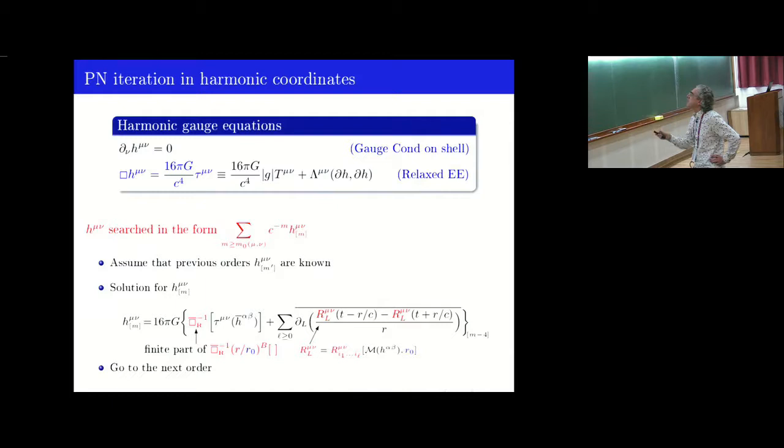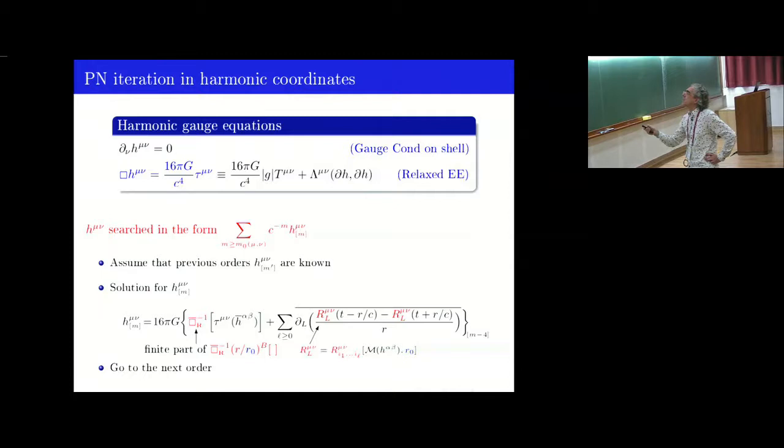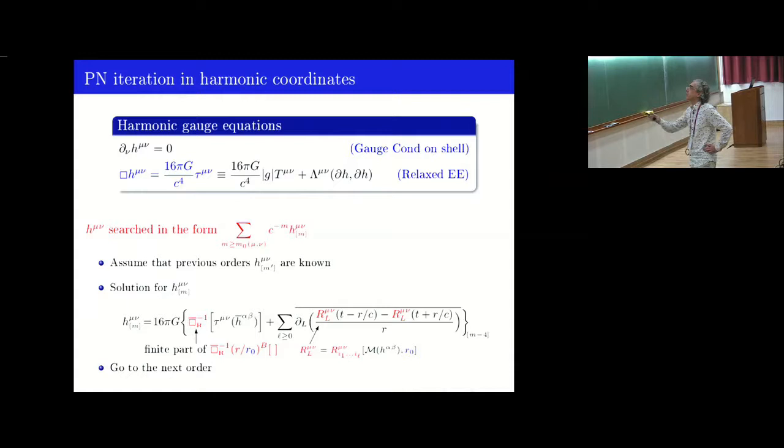We use conveniently for general systems, not necessarily binary systems, a formulation in harmonic coordinates. We take the harmonic gauge condition, where H is the deviation of the Gothic metric with respect to the flat metric, and we obtain a wave type equation. This is the flat box operator with an effective pseudo-stress energy tensor, containing notably the non-linearities of the Einstein equations. And we search their post-Newtonian solutions in this expanded form. It's 1 over C M here. If the previous orders are known to construct the current order, what we do is that we have to solve this equation. For me it is a retarded integral. However, because it's a post-Newtonian expansion here, we have to expand this integral.